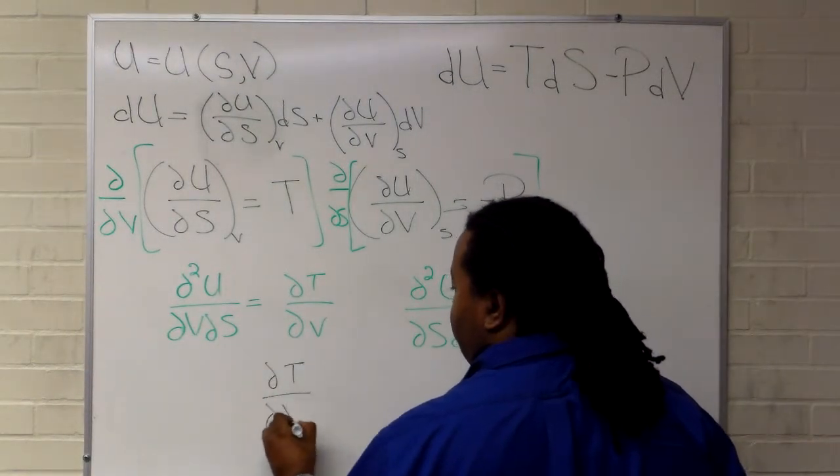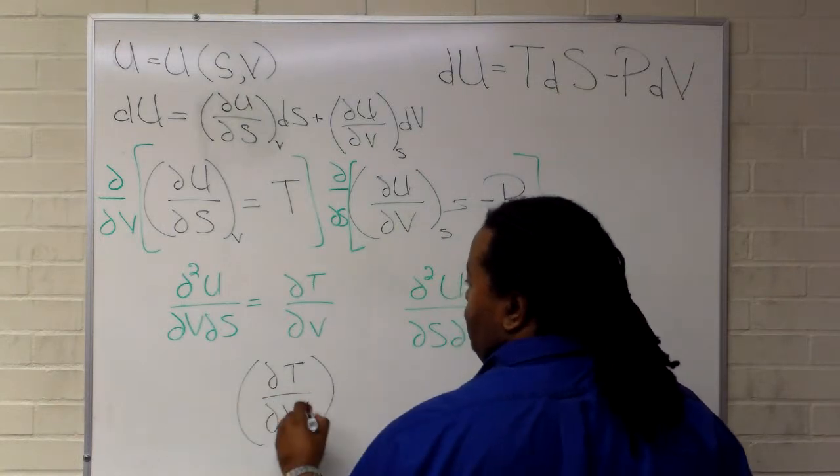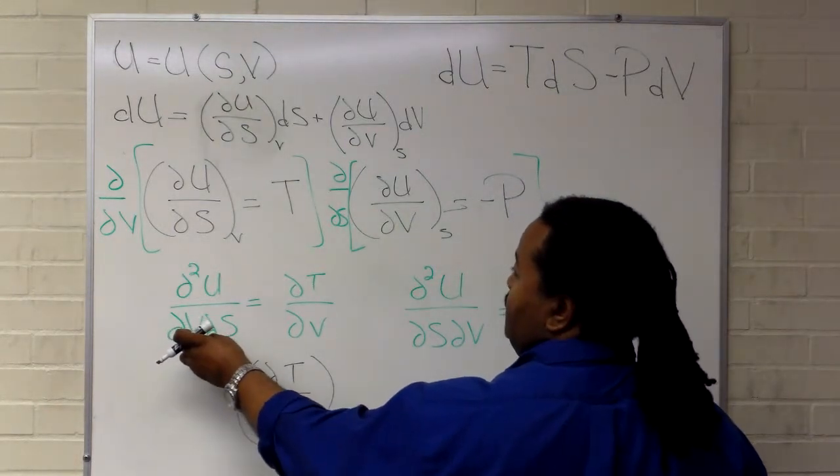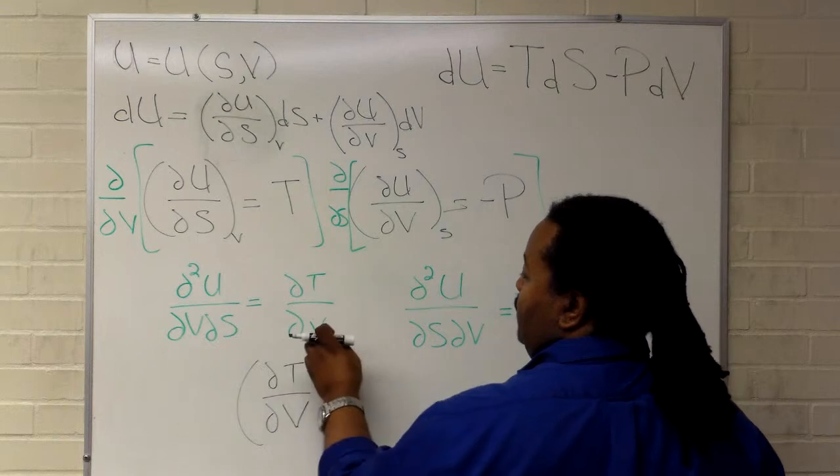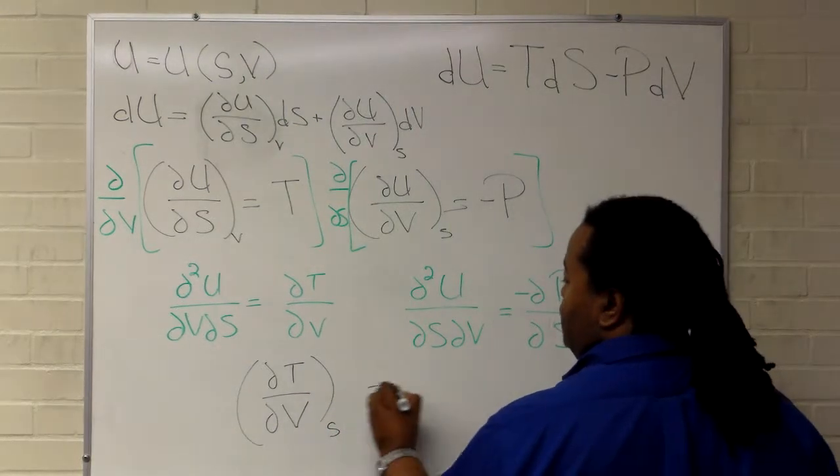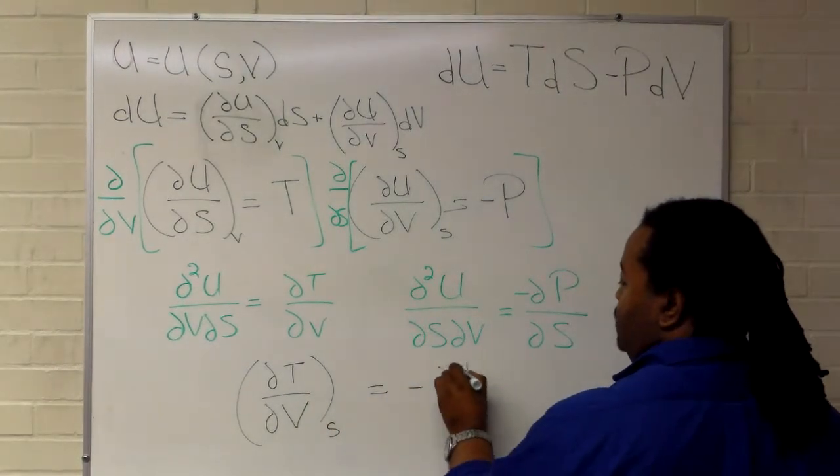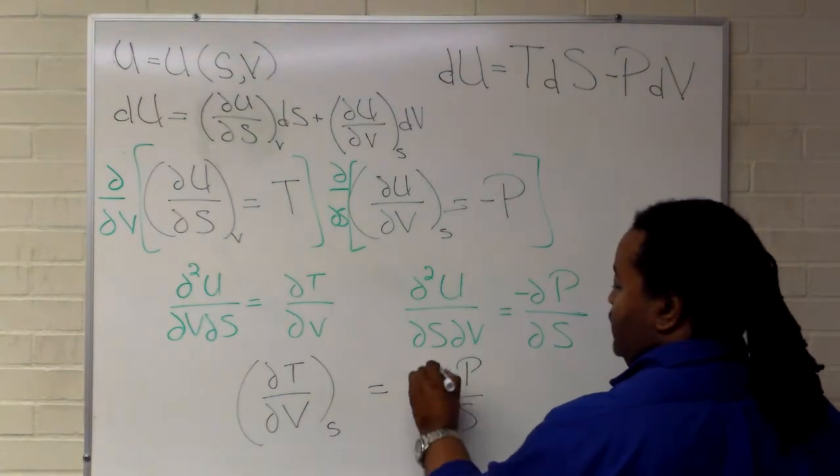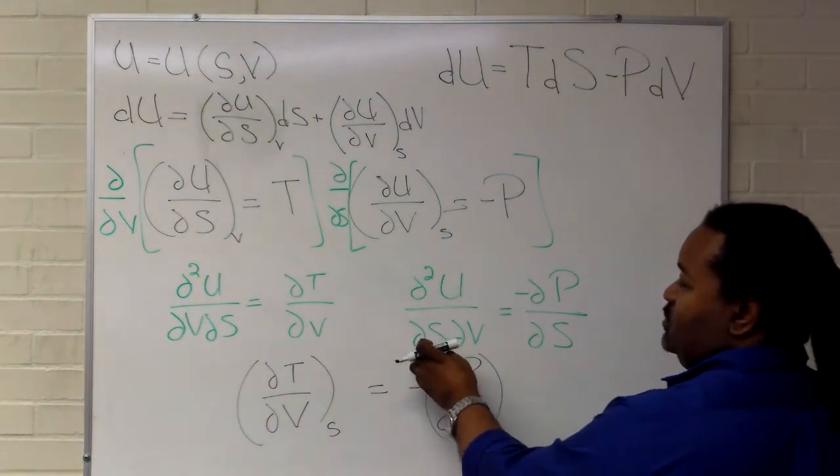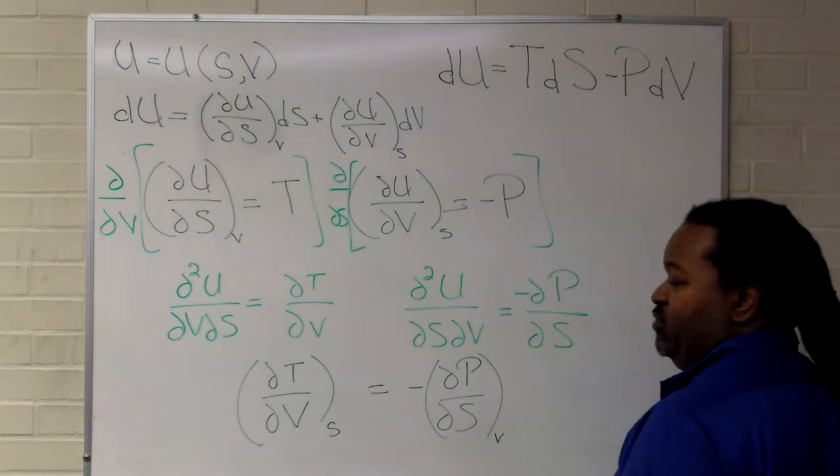So we have that this quantity, partial T partial v, and because we took the second partial with volume, then we assume that s is constant, it's going to be minus partial p partial s, and since this was taken with s, v must be constant.